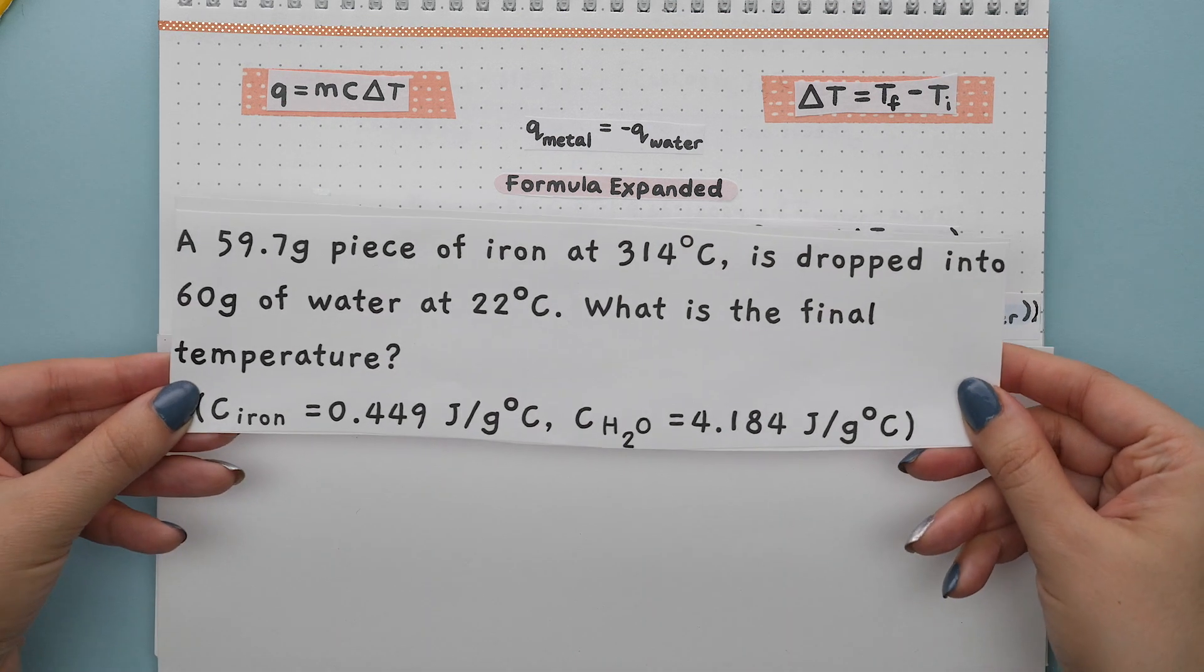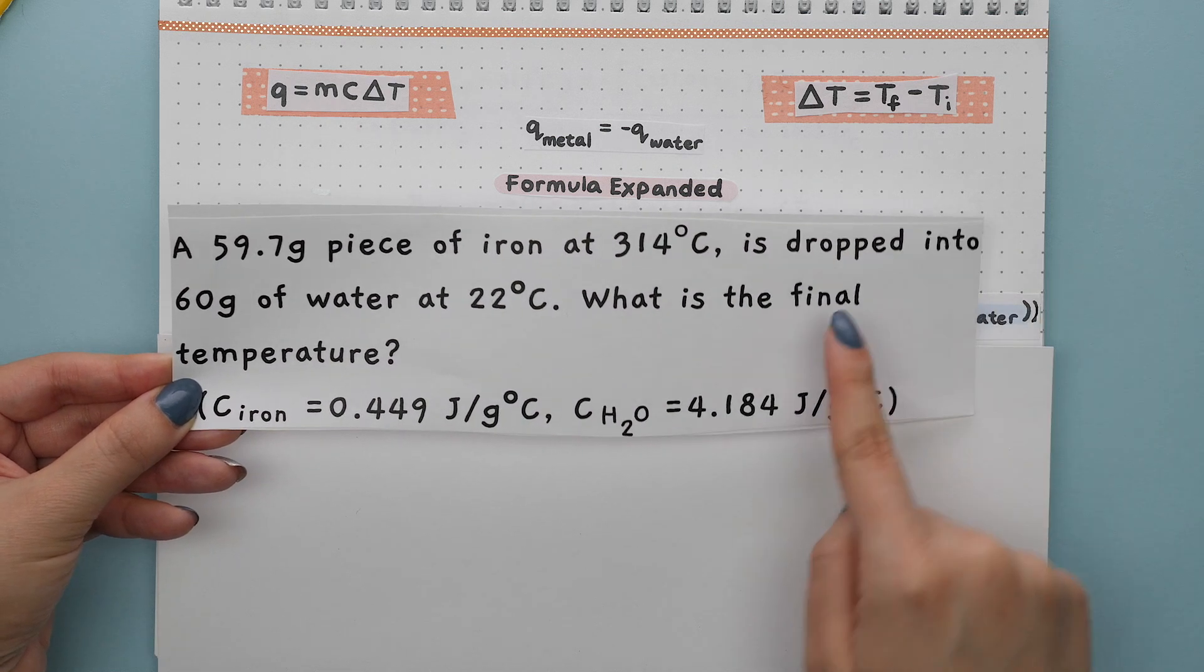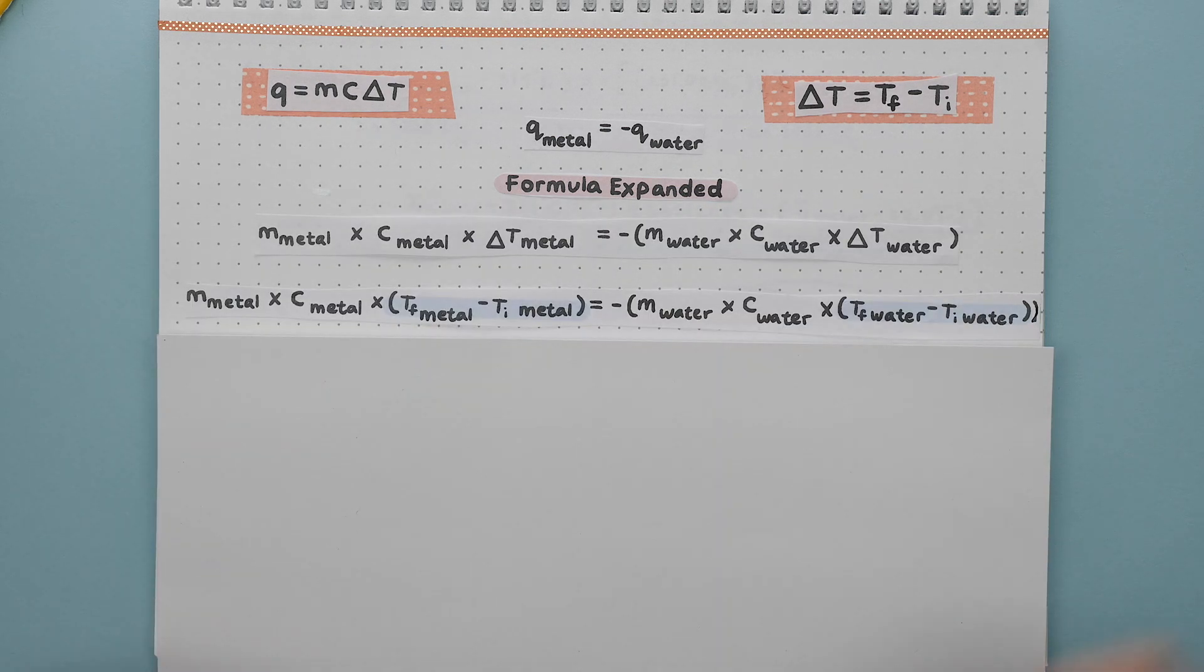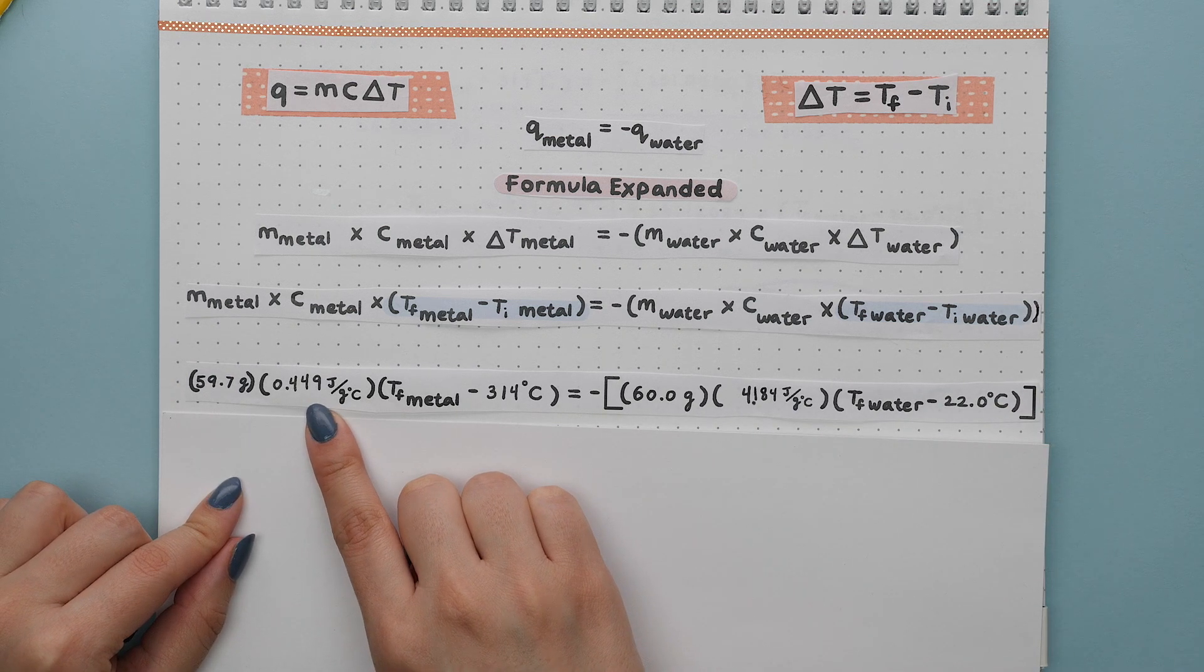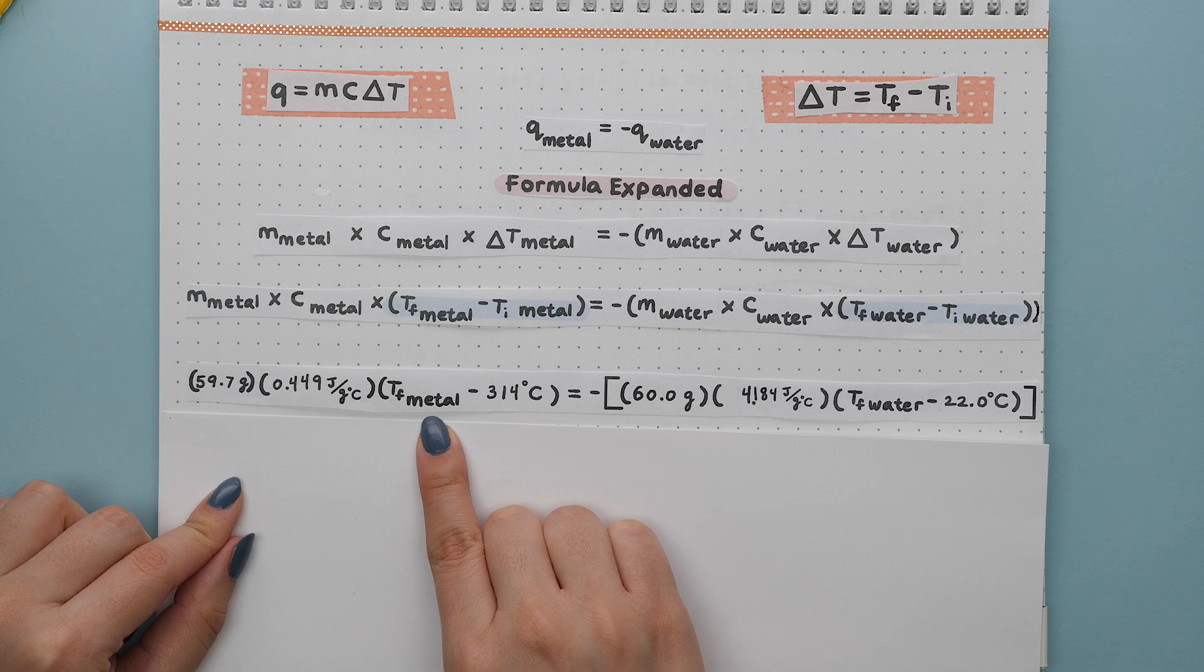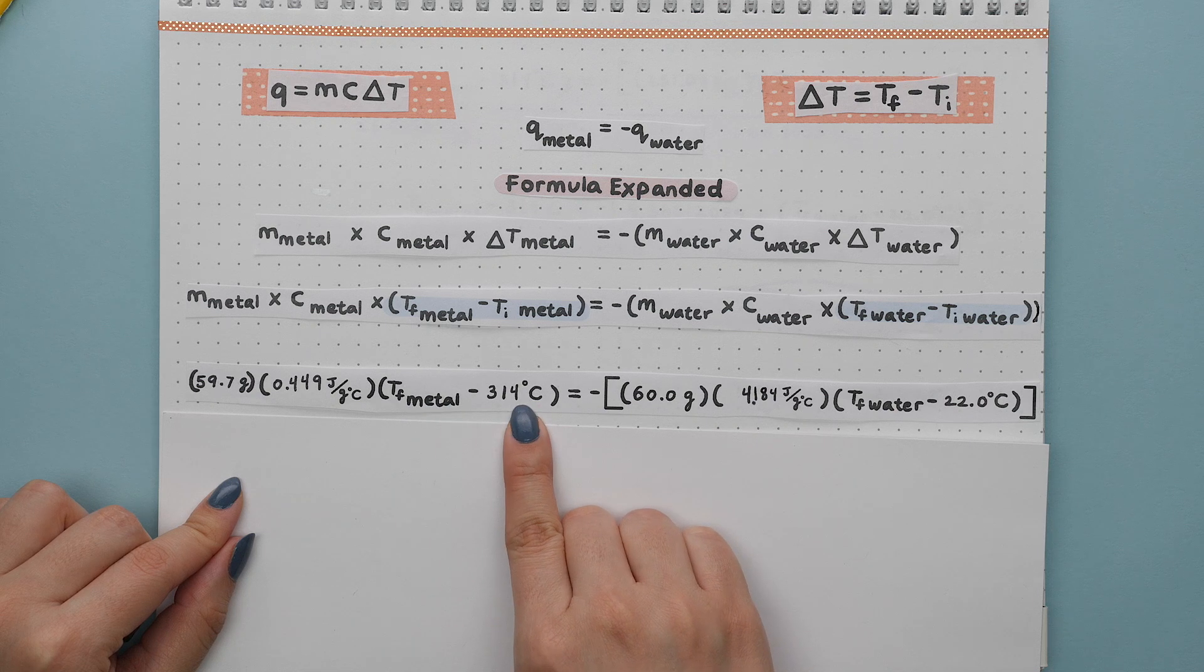Next we can plug in everything we are given and then solve for the final temperature. Starting with the mass of the metal, the specific heat capacity of the metal, we don't know the final temperature of the metal, we only know the initial temperature of the metal.